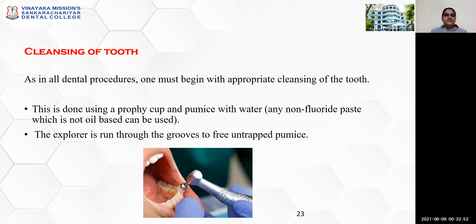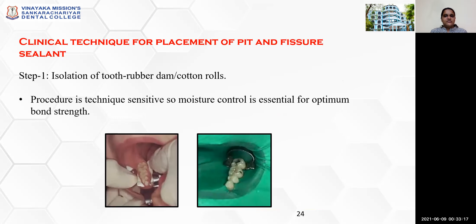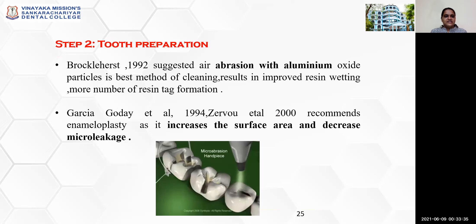Before starting the procedure, it is essential to clean the tooth surfaces, mainly the occlusal surfaces. As in all dental procedures, one must begin with appropriate cleansing of the tooth using a prophy cup and pumice with water. Any non-fluoride, non-oil-based paste can also be used. Step 1 is isolation of the tooth with rubber dam or cotton rolls. The procedure is very technique sensitive, so moisture control is essential for optimum bond strength.